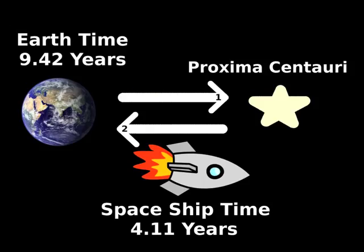So while our friends have aged more than 9 years on Earth, we've aged only 4 on our spaceship. But wait, if we've traveled 8.5 light-years in only 4 years, does that mean our rocket is traveling more than twice the speed of light? Actually no, because there's also an effect called length contraction.